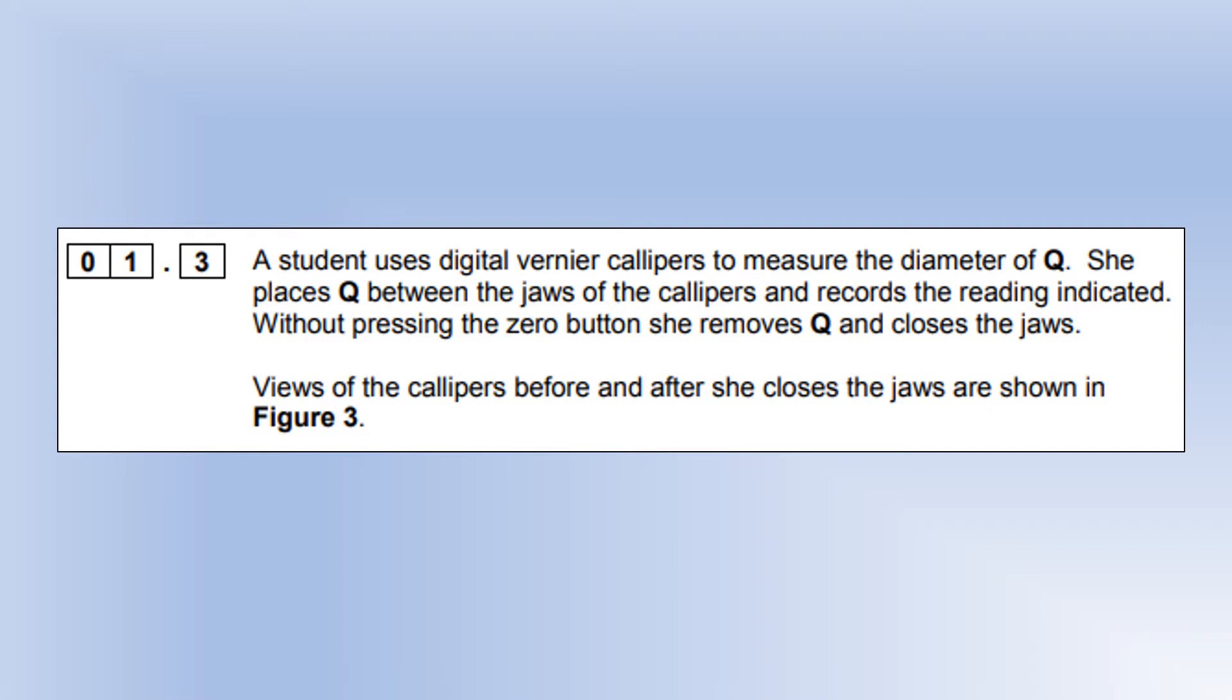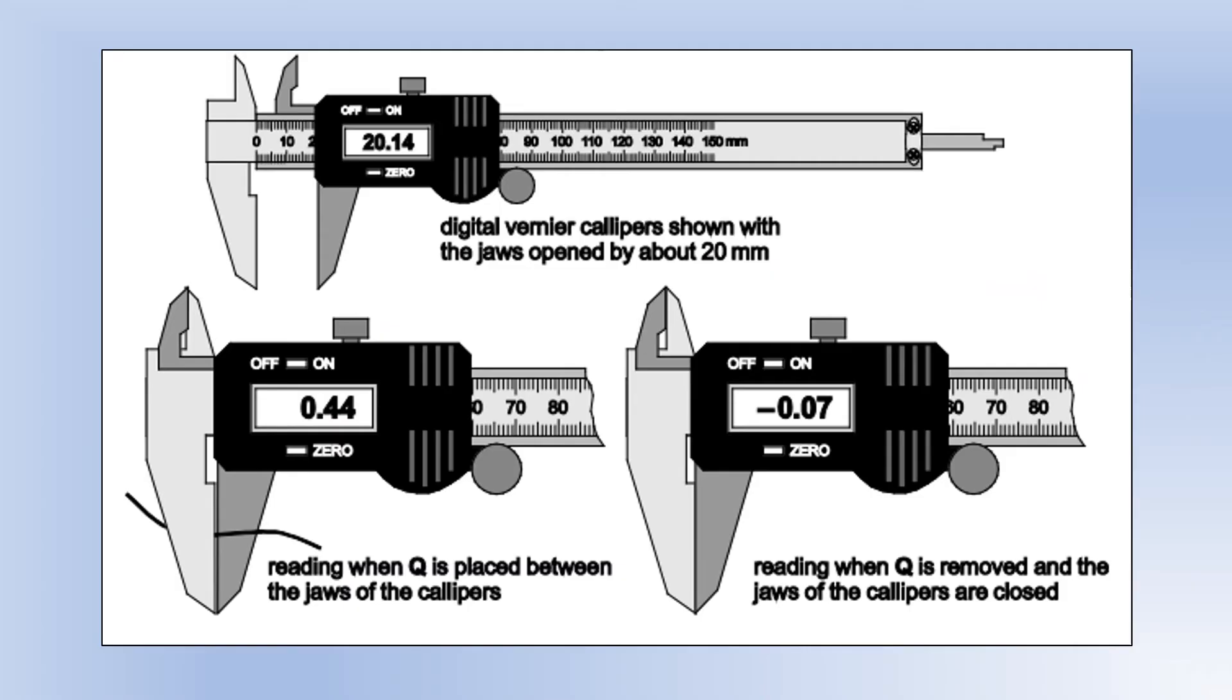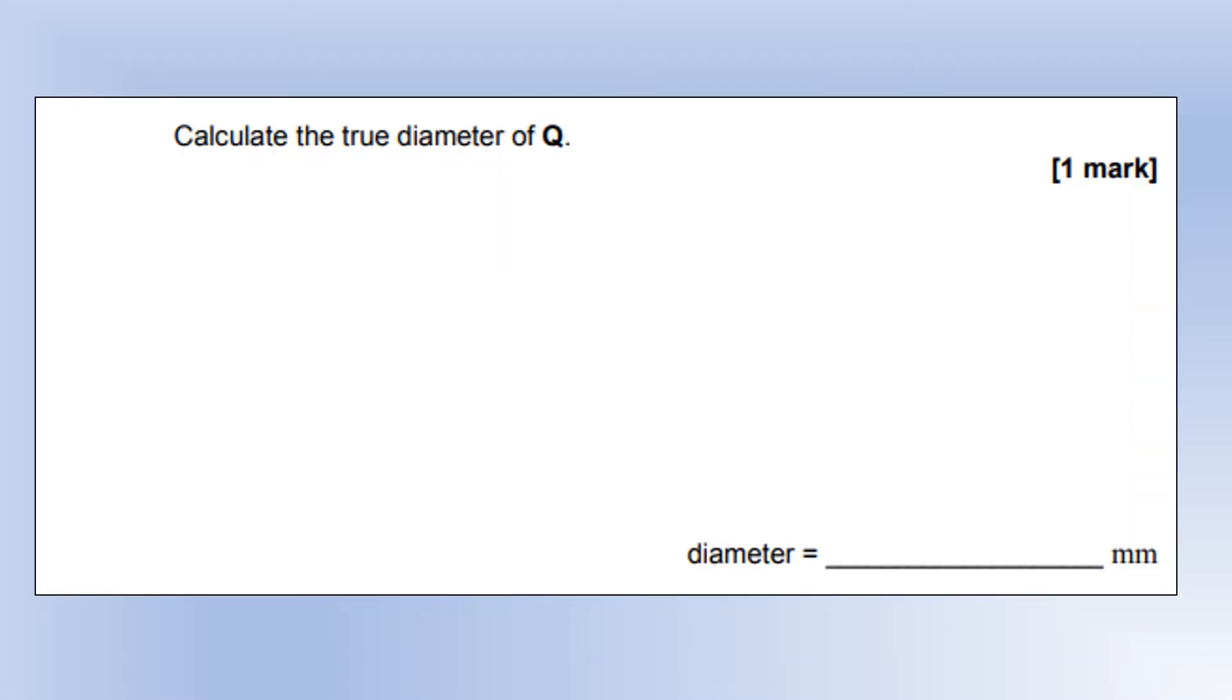The student uses a digital vernier calipers to measure the diameter of Q. She places Q between the jaws and records the reading without pressing the zero button, then moves Q and closes the jaws. The measurement is 0.44 with the object between the jaws and minus 0.07 with the jaws completely closed. So the diameter of Q is going to be calculated by adding together 0.44 and 0.07 to give you 0.51 millimeters.